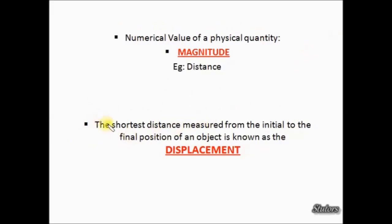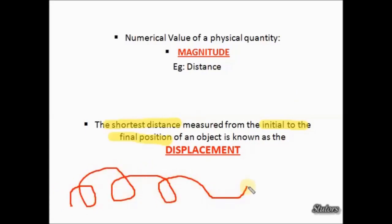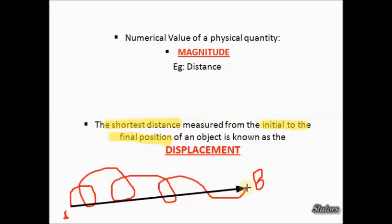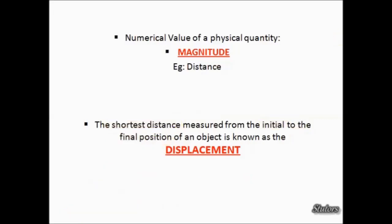The shortest distance measured from the initial to the final position of an object is the displacement. Imagine an ant has moved along some curved path — it started from A and stops at B. The displacement here is the shortest distance, which is a straight line from the starting point A to the ending point B. Now, distance is just a numerical value, and such a numerical value of a physical quantity is called its magnitude.